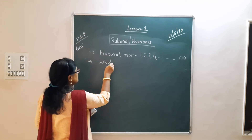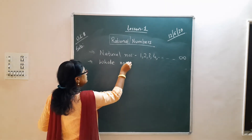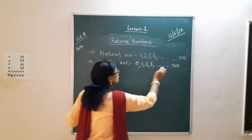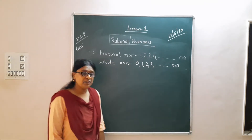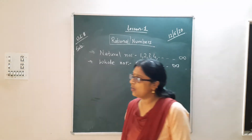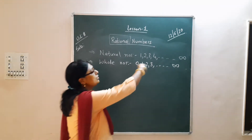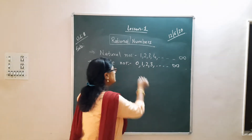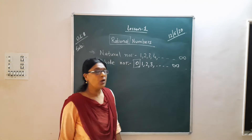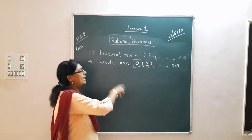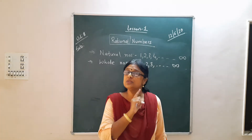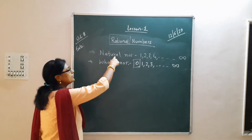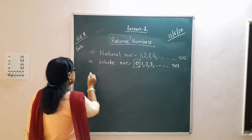Next are whole numbers. Whole numbers means they start from 0 — 0, 1, 2, 3, to infinity. So children, can you tell me what is the difference between natural numbers and whole numbers? Both are positive: 1, 2, 3, 4 in both. The difference is 0. Whole numbers start with 0 and natural numbers start with 1. So 0 is not included in natural numbers, but whole numbers start from 0. This is the only difference between natural numbers and whole numbers.